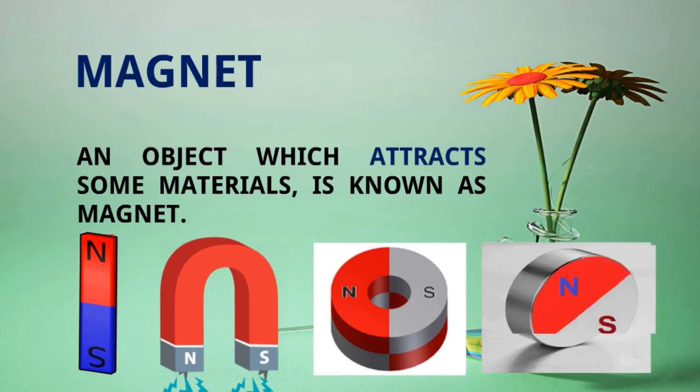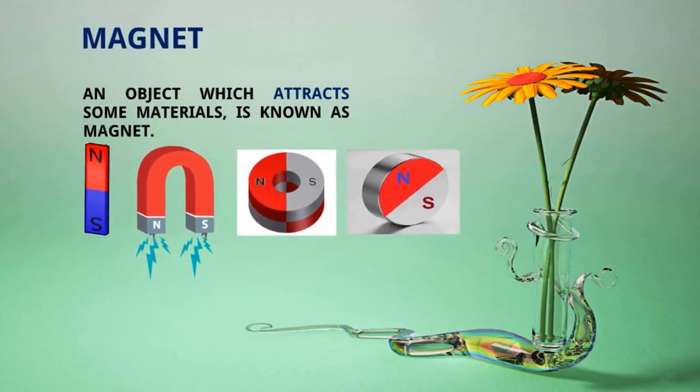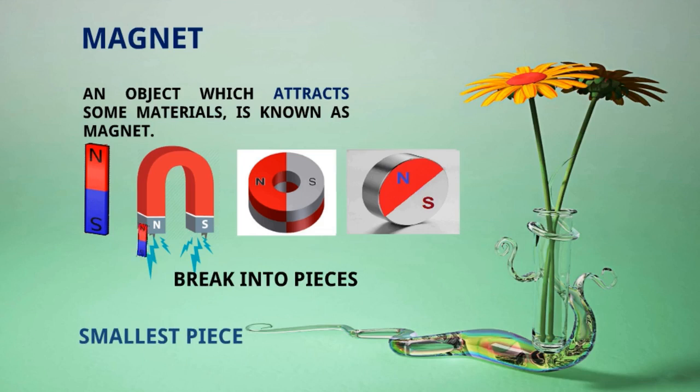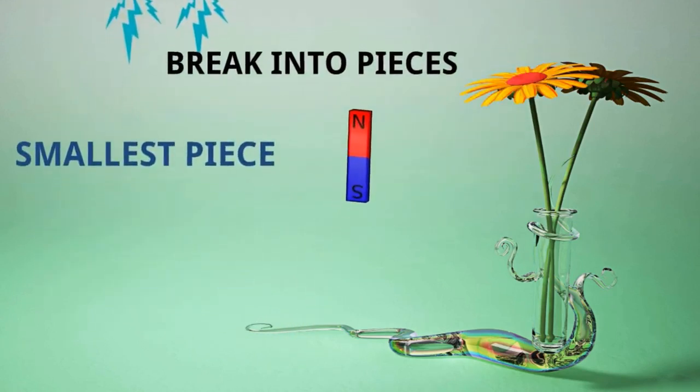The most interesting thing about the magnet is that if you break any magnet into small pieces, the smallest piece also will be a magnet and it will have the same properties like other magnets. It will have north pole and south pole and it will also attract like other magnets.